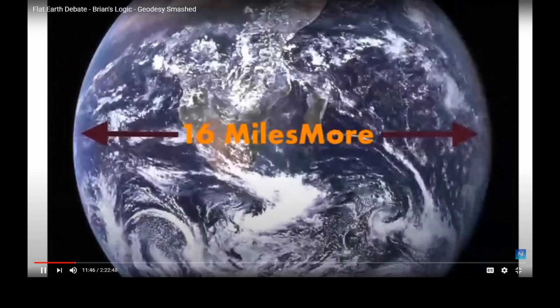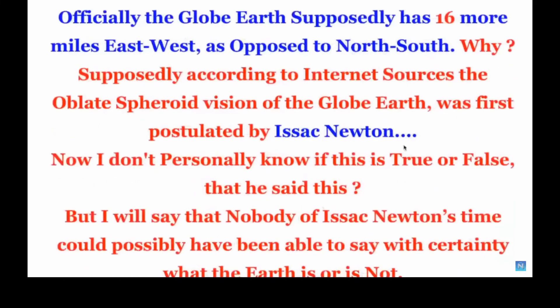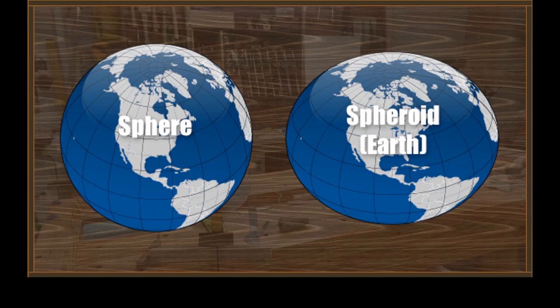This is the globe earth as we've been showing it. This is the famous blue marble photograph. Officially, the globe earth supposedly has 16 more miles east to west as opposed to north-south. Why? Supposedly, according to internet sources, the oblate spheroid vision of the globe earth was first postulated by Isaac Newton. Hold on Brian, you ask a good question but then you didn't give an answer. You ask why is the earth an oblate spheroid, then you started talking about who was the first guy to say it.